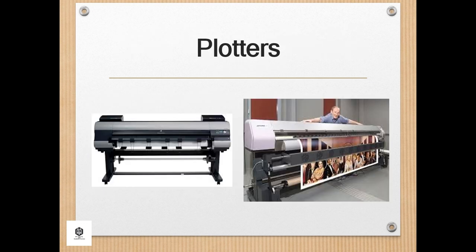Pen-based plotters were an alternate printing technology once common in engineering and architectural firms. Pen-based plotters rely on contact with the paper but not impact per se, using special purpose pens that are mechanically run over the paper to create text and images. Since the pen's output is continuous lines, they were able to produce technical drawings of higher resolution than was achievable with dot matrix technology. Some plotters use roll-fed paper, with minimal restriction on the size of output in one dimension, making them capable of producing quite sizable drawings. A plotter is a large device used to print large posters and documents.